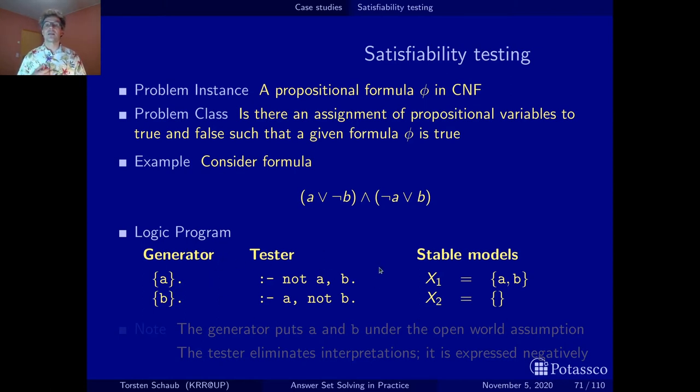Now, the tester eliminates counter-models. It eliminates interpretations that are no models. The first integrity constraint eliminates interpretations that would not satisfy the first disjunction. It says it must not be the case that a is false and b is true, because then this disjunction here would be false. In the same way, the second integrity constraint eliminates interpretations that are no models of the second disjunction. In our case, both of them eliminate the model where only a is true and only b is true. Keep in mind that this is actually an equivalent, saying that a if and only if b. So we have two models where both a and b are true and where both a and b are false.